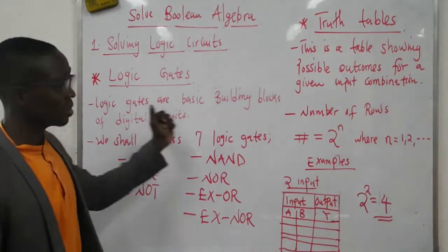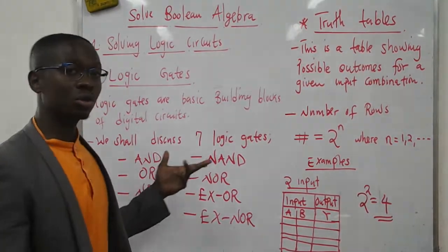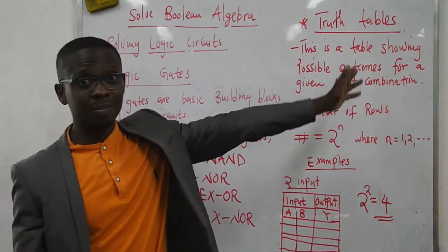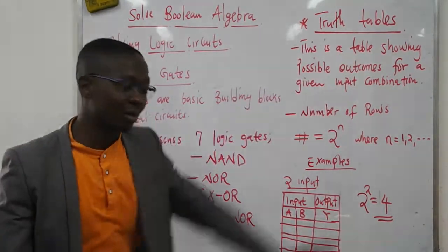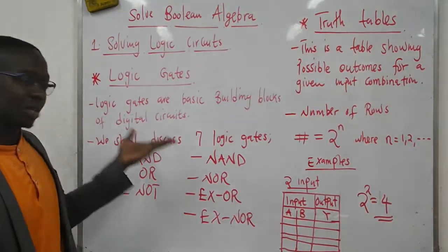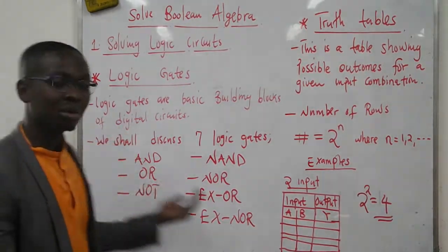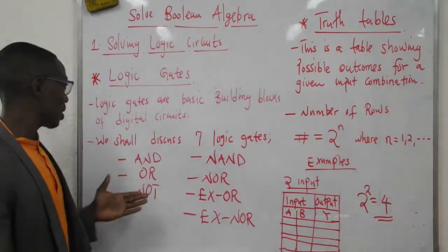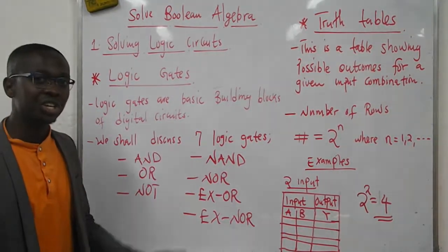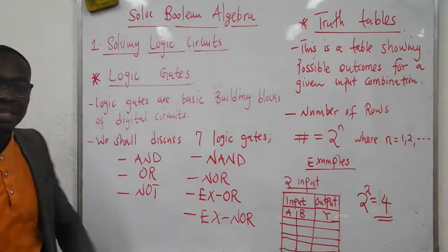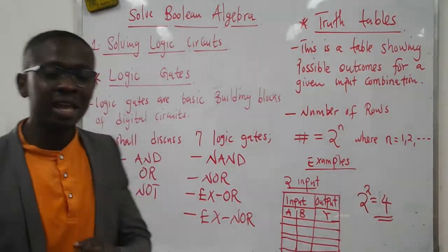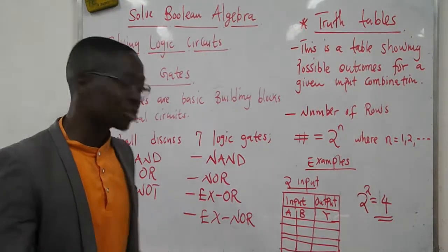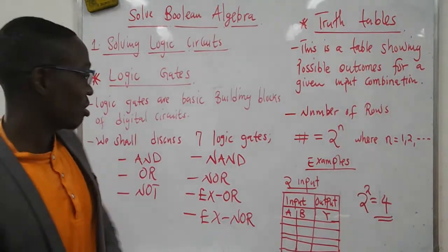In solving logic circuits, we will discuss two aspects. One of them is logic gates — logic gates are basically building blocks of any digital circuit. In this chapter we shall discuss seven logic gates: the AND gate, the OR gate, the NOT gate, the NAND, the NOR, the XOR, as well as the XNOR gate.